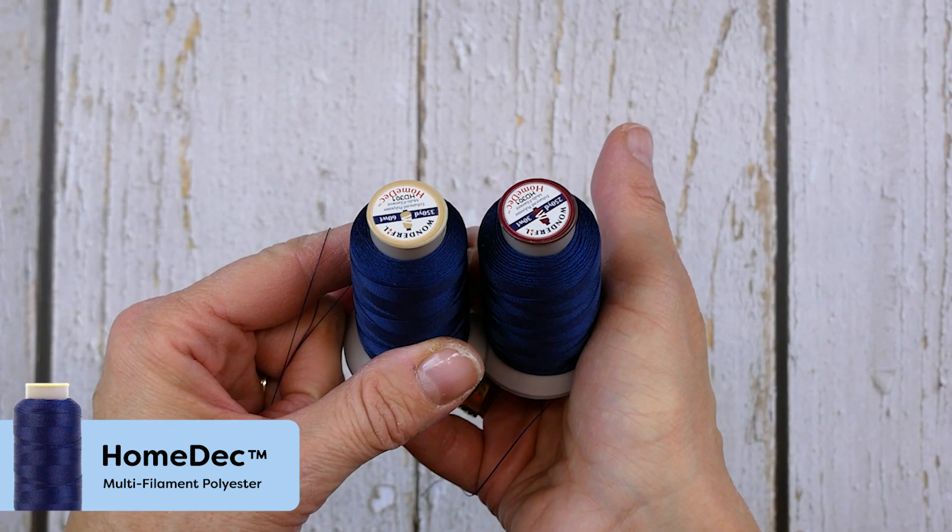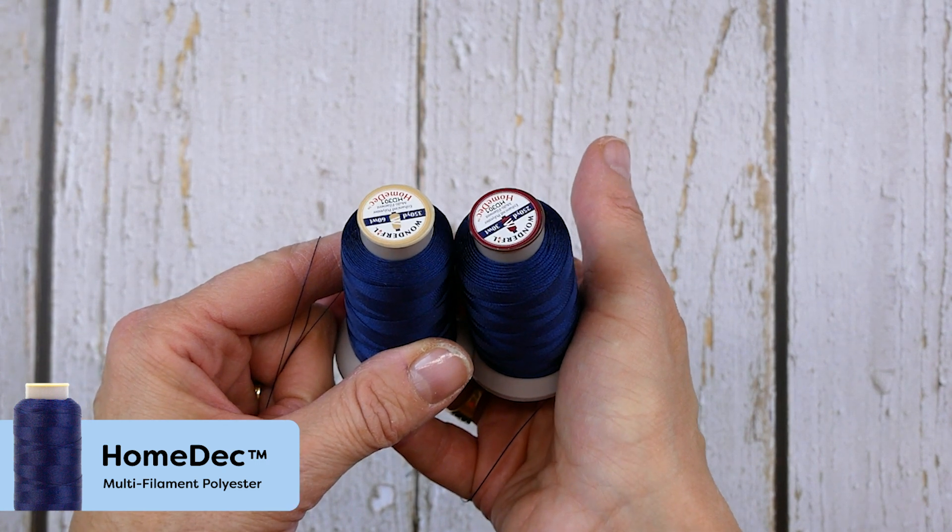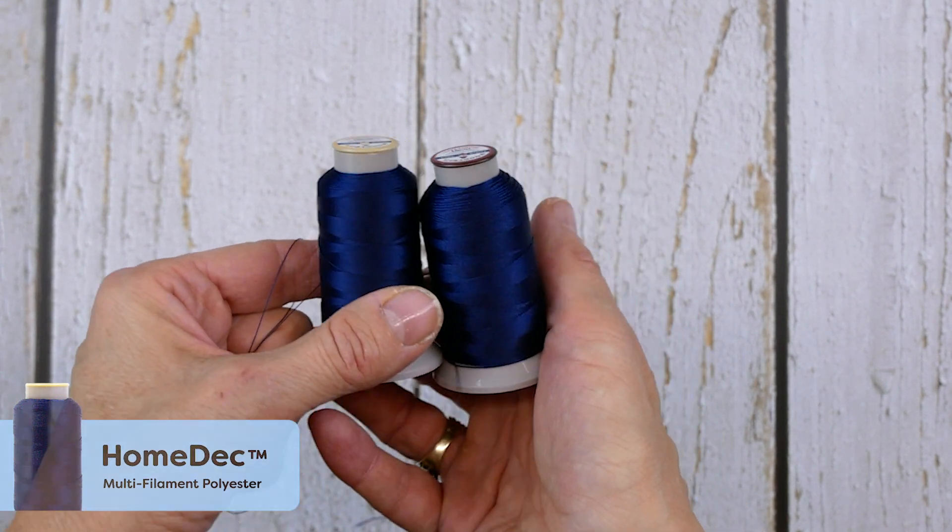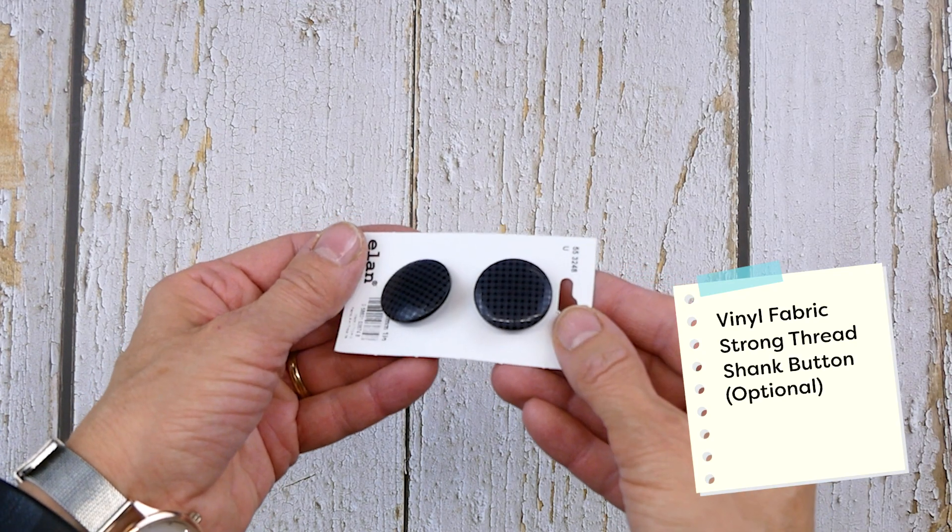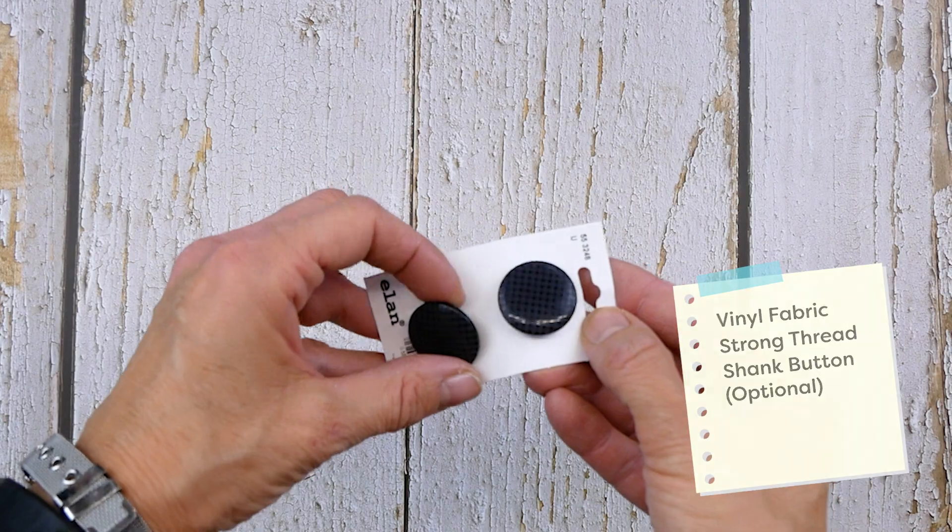Home deck is available in 20 colors in all three weights, so it will be easy to find a good match. I have also picked up a large shank button to add some detail to my ottoman.